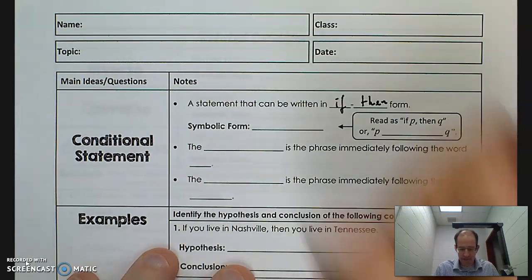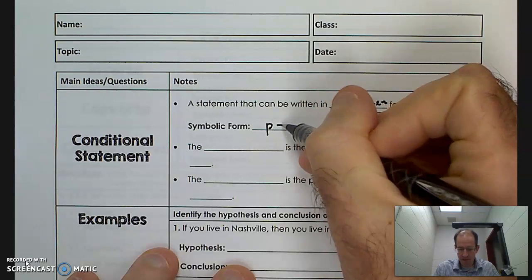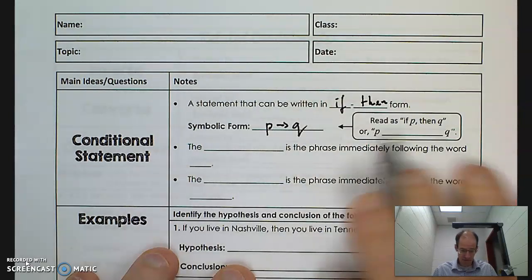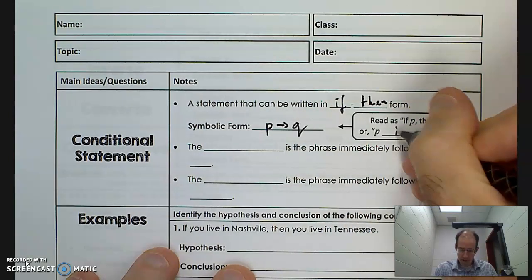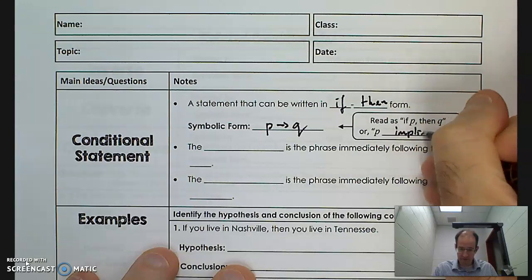The symbolic form is this: P implies Q — if P, then Q. Either written as P arrow Q, or 'P implies Q.'